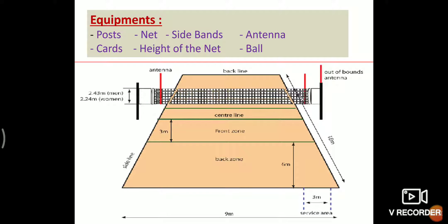Antenna: An antenna is a flexible rod, 1.80 meters long and 10 millimeters in diameter, made of fiberglass or similar material. An antenna is fastened at the outer edge of each side band. The antennas are placed on both sides of the net. The top of each antenna extends 80 centimeters above the net and is marked with 10 centimeter strips of contrasting colors, preferably red and white.